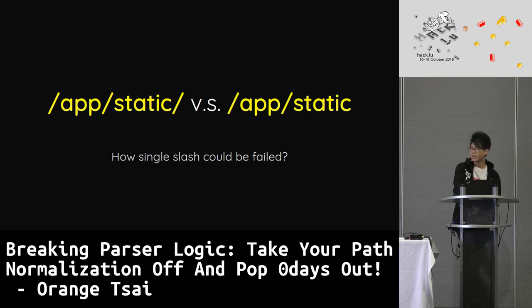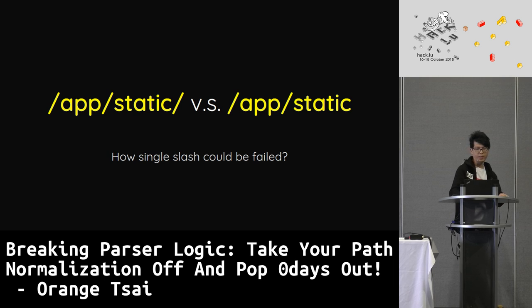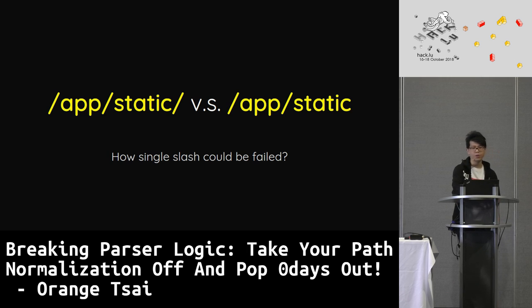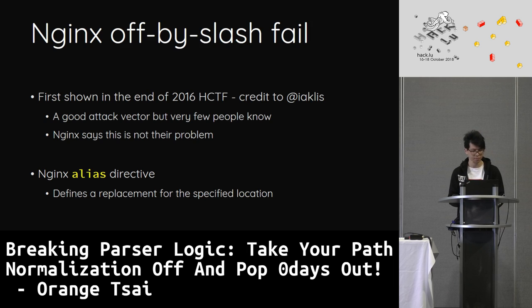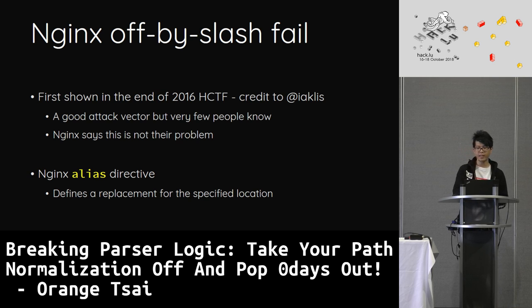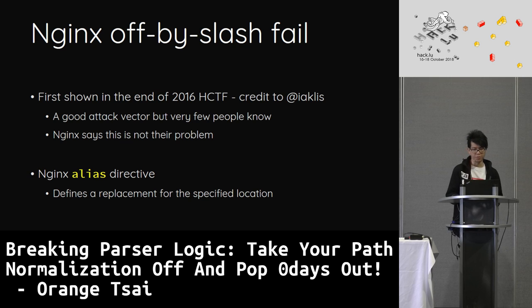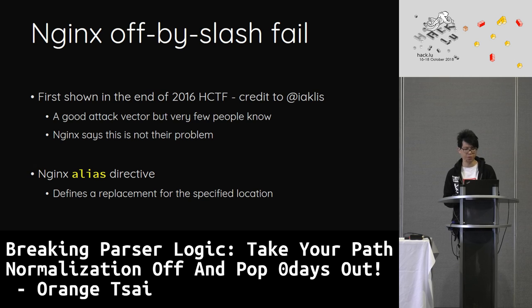The next class is how a single slash can cause failures. Maybe you have set up several paths in the past, but does your path end with a slash? This is an important question. This is an off-by-slash flaw in nginx. The first time this problem was shown was at the end of 2016, credit to my friend Agnes. Although this is not new, it's still worth mentioning — it's a good attack vector without many people knowing it, and the idea appears in the real world again and again.